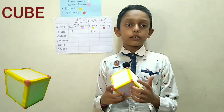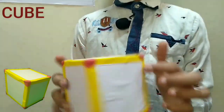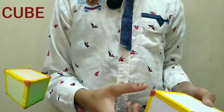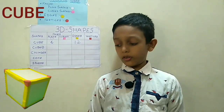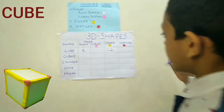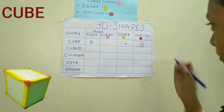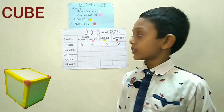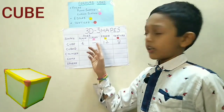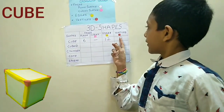Now we will count the vertices of the cube. 1, 2, 3, 4, 5, 6, 7, 8. So there are 8 vertices in the cube. So the cube has 6 plain surfaces, no curved surface, 12 edges and 8 vertices.